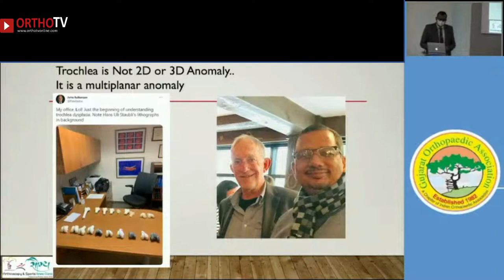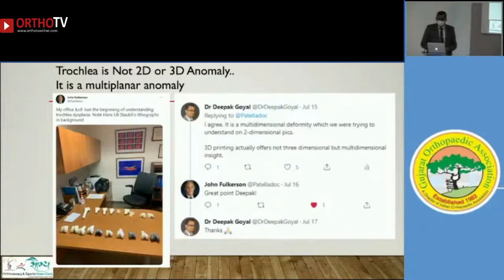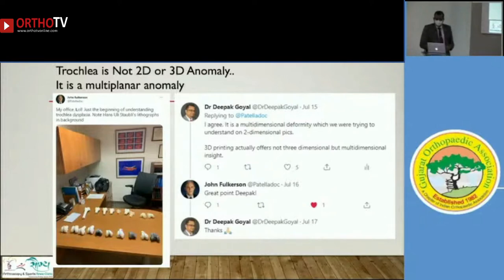Recently, John Fulkerson published a tweet showing a 3D printed trochlea on his desk, saying they are learning more about 3D printing of the trochlea. I replied that I agree, but it is a multidimensional deformity which we were trying to understand on a two-dimensional picture — that is, the Dejour classification. And 3D printing actually offers not just three-dimensional, but multidimensional insight.